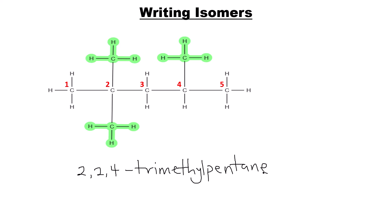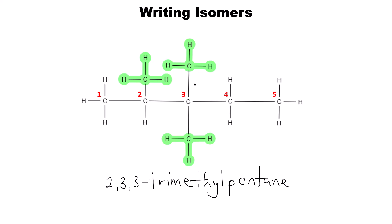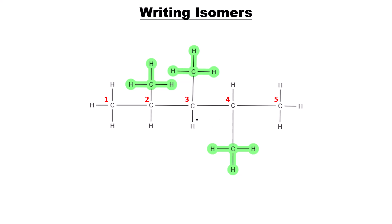For the next isomer, move the methyl group on carbon two to carbon three, and move the one on carbon four back to carbon three as well. That gives us 2,3,3-trimethylpentane. Shifting one group further gives 2,3,4-trimethylpentane.